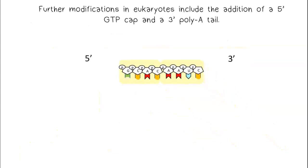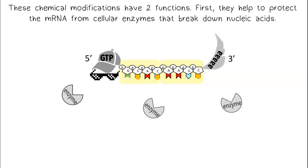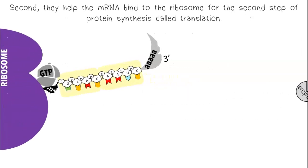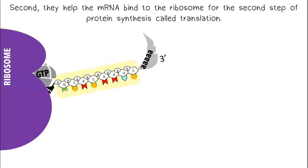Further modifications in eukaryotes include the addition of a 5' GTP cap and a 3' poly-A tail. These chemical modifications have two functions. First, they help to protect the mRNA from cellular enzymes that break down nucleic acids. Second, they help the mRNA bind to the ribosome for the second step of protein synthesis called translation.